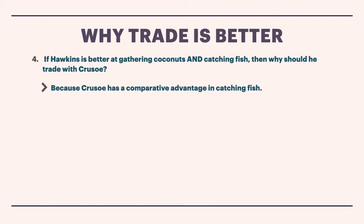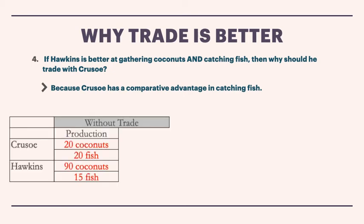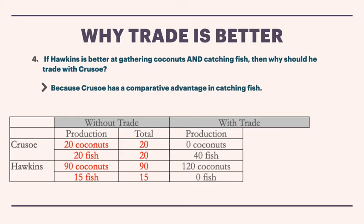Let's take a look at a chart showing production. If they decide not to trade with each other, Crusoe can do 20 coconuts and 20 fish, and Hawkins could gather 90 coconuts and catch 15 fish — those are their totals if they choose not to trade. Now let's say they do decide to trade. Crusoe has a comparative advantage at catching fish, so he's just going to catch fish. Hawkins has an advantage in gathering coconuts, so he's just going to gather coconuts. If they spend all their time on that one activity, Crusoe can catch 40 fish and Hawkins can gather 120 coconuts.